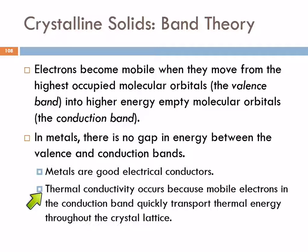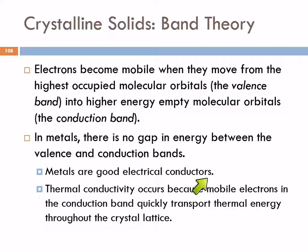Thermal conductivity happens because those mobile electrons in the conduction band are able to quickly transport thermal energy throughout the crystal lattice. Why do we make our pans out of metal? Because we want the heat from the burner to be conducted through the metal to the food. Thermal conductivity happens faster in metals because those mobile electrons can carry thermal energy from one part of the metal to the other. In a substance where no particles are free to move, thermal conduction is much slower.